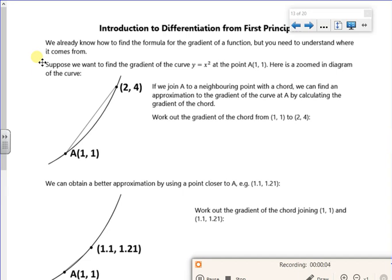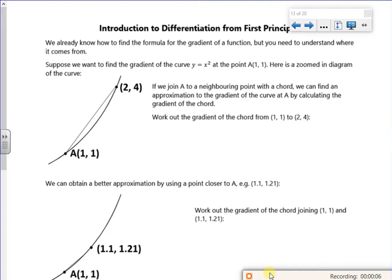Hi everyone, so this is the last lesson for the differentiation two-pack and we're kind of going back to the start. This is first principles. So it's building on the idea that the gradient of a tangent is just a gradient. It's just a change going up divided by a change going across.